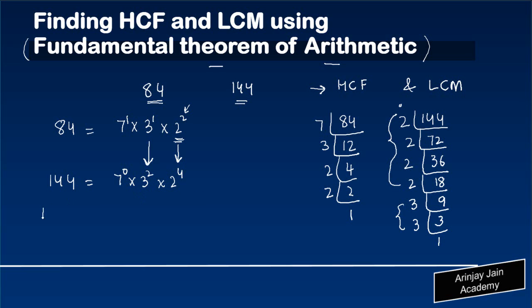Now in order to find out the HCF of two numbers 84 and 144, what I need to do is very simple. You need to find out for each of these prime numbers what is the lowest power.